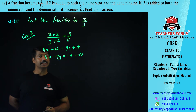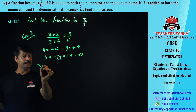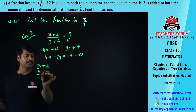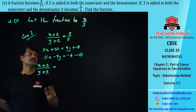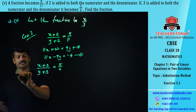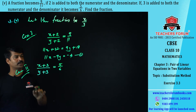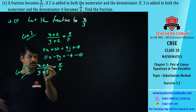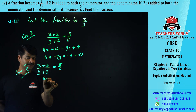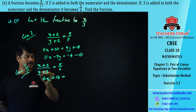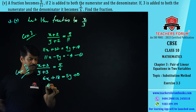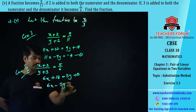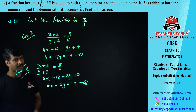Case 2: if you add 3 to both numerator and denominator, the fraction becomes 5/6. So (x + 3)/(y + 3) = 5/6. Cross multiplying: 6(x + 3) = 5(y + 3), giving 6x + 18 = 5y + 15. Rearranging: 6x − 5y = −3. This is equation number two.